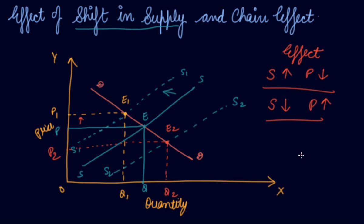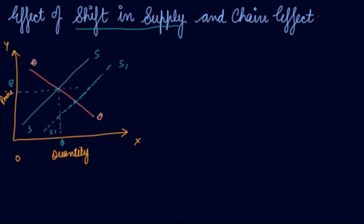This is the effect of a shift in your supply curve. With increase in supply, your price decreases in the market; if your supply decreases, your price increases. Don't confuse this effect with the law of supply, which applies to an individual producer. Now we're talking about the market effect — what will happen in the market if supply increases or decreases.